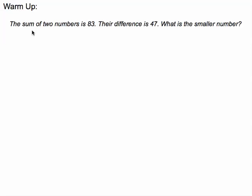You know you're dealing with a system of equations because you have one relationship where the sum of two numbers is 83, a second relationship where their difference is 47, and you have two unknowns—a larger number and a smaller number.